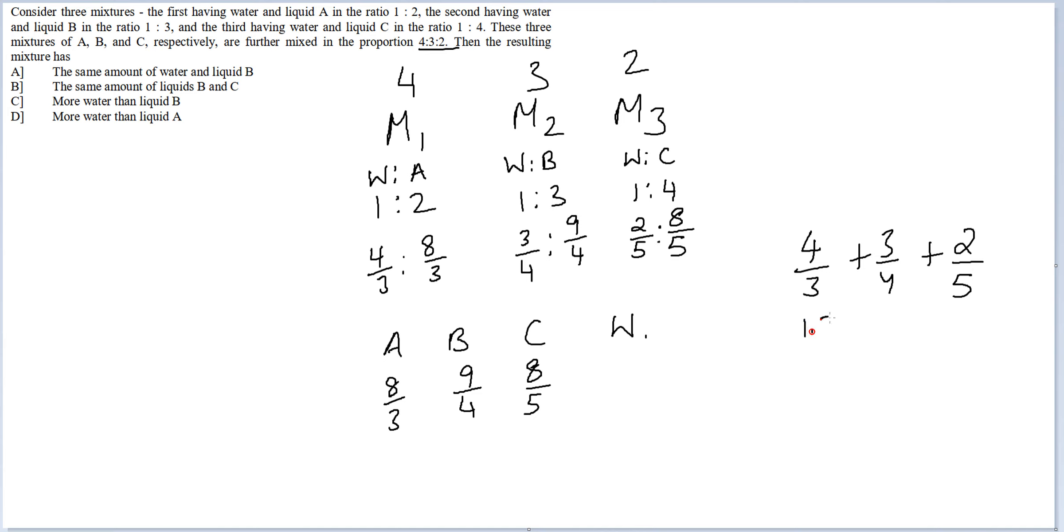If you add these up, this is 1.33, this is 0.75, and this is 0.4. So you get 0.75 plus 0.4, you get 1.15 here plus 1.33. You add these two up, you get 2.48.